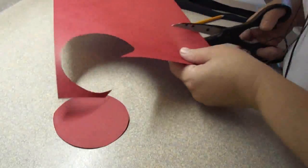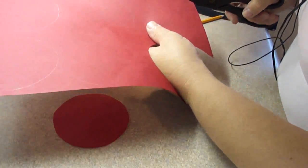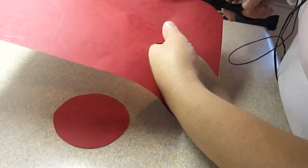You're going to just draw out the circles and then cut them out. To make things easier, you can just stack the paper and then cut out several at a time. That also works as well.